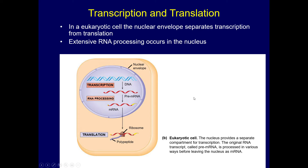Welcome back. Today we're talking about transcription and translation. In eukaryotic cells, the nuclear envelope separates transcription from translation. Transcription is the creation of RNA and happens inside the nucleus, while translation, which is the creation of a protein, happens outside of the nucleus.